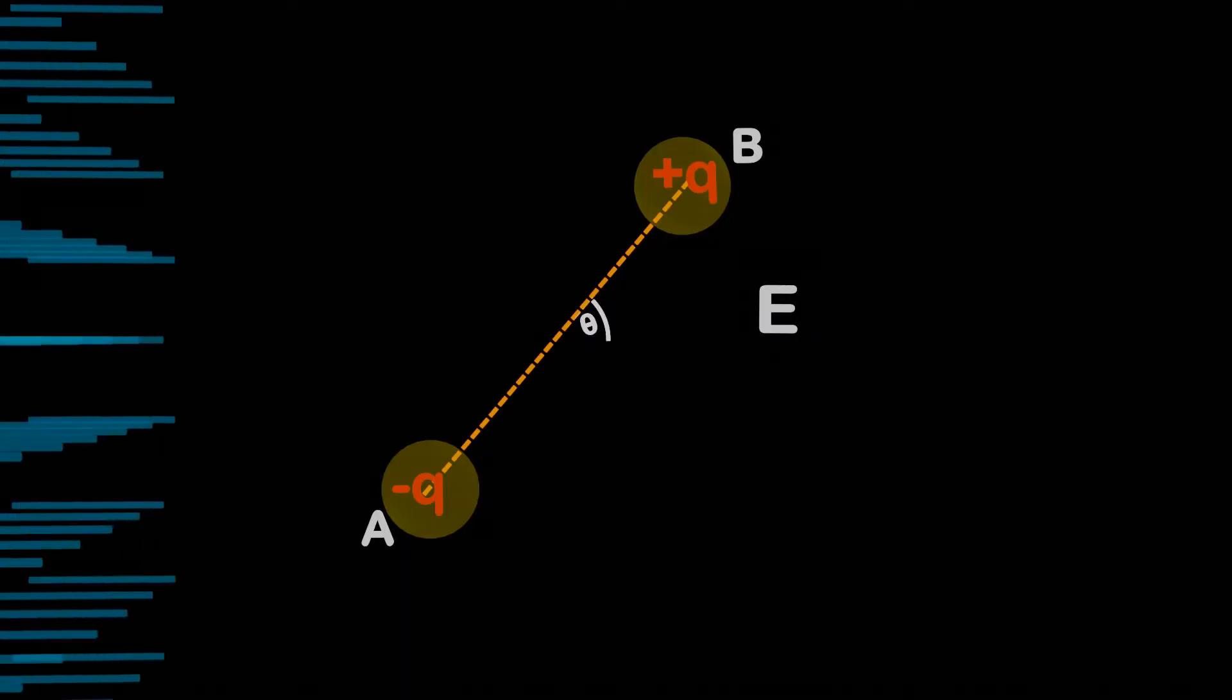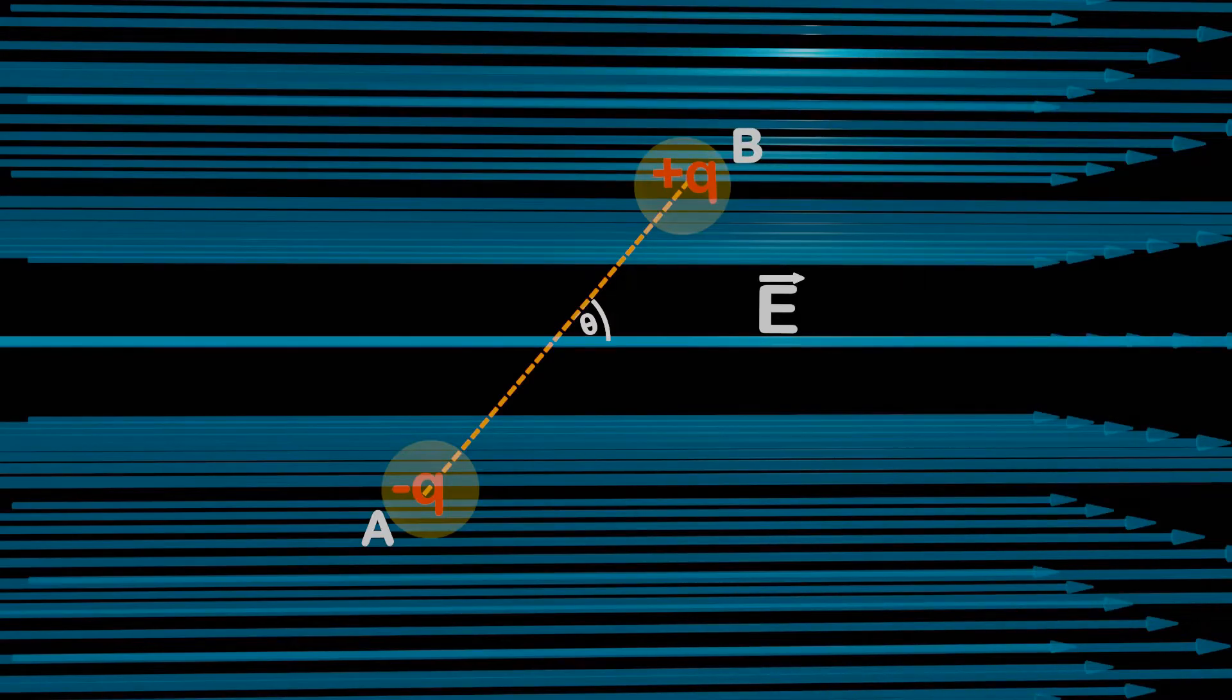So let's consider an electric dipole AB, where equal and opposite charges are placed at a fixed distance from each other, making an angle theta with the uniform electric field. The charges are located at a fixed distance L from the centre of rotation O. Both charges have the same magnitude. Therefore, equal forces will act on both ends, positive and negative of the dipole.